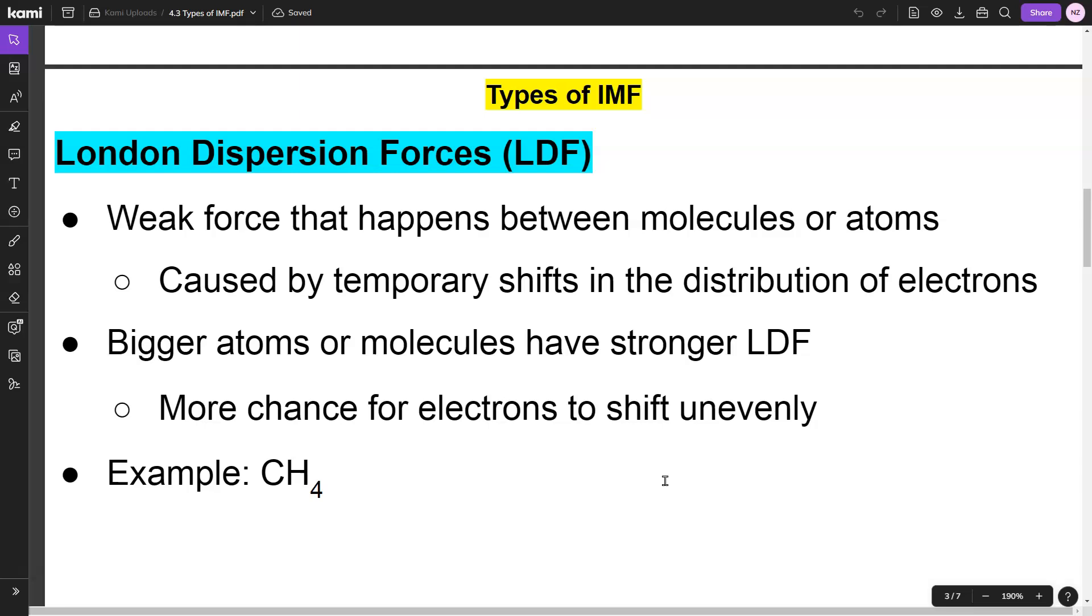Bigger atoms or molecules have stronger London dispersion forces because there's more chance for electrons to shift unevenly. An example of a molecule that contains London dispersion forces is CH₄, which is a non-polar molecule.